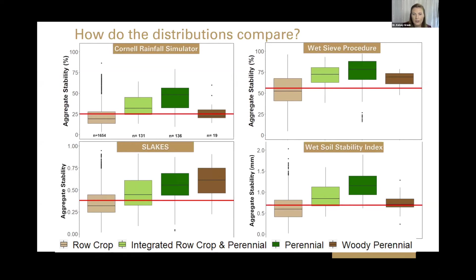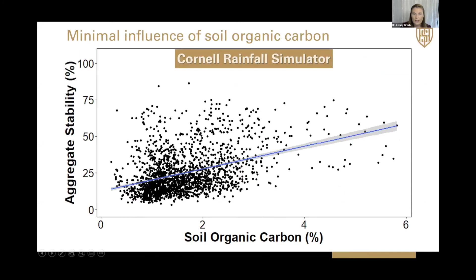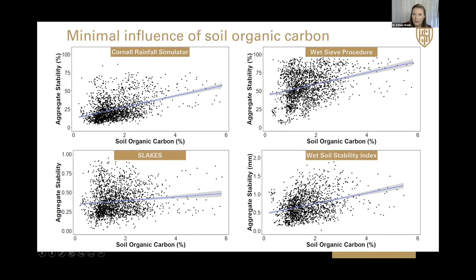Next, we looked at soil properties and how they might influence aggregate stability. On the x-axis we have soil organic carbon, and on the y-axis aggregate stability. Scatter plots show a slight trend of increasing aggregate stability with increasing soil organic carbon for most methods. However, these are very weak associations — Cornell had the strongest trend with soil organic carbon, and Slakes had the weakest. So based on this raw data, there's only slight influence of soil organic carbon on aggregate stability.